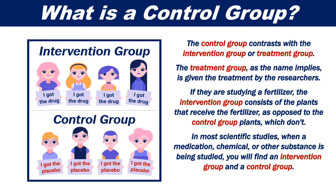The treatment group, as the name implies, is given the treatment by the researchers. If they are studying a fertiliser, the intervention group consists of the plants that receive the fertiliser, as opposed to the control group plants, which don't.